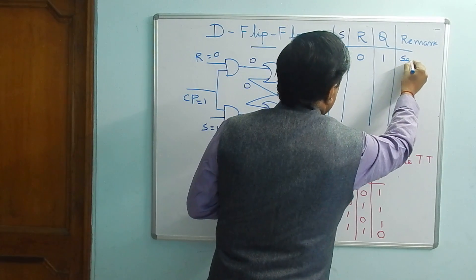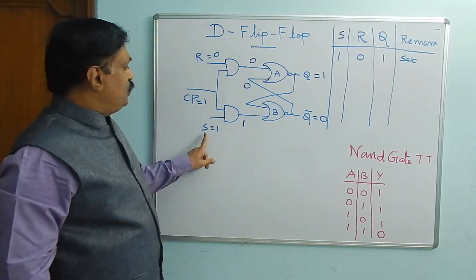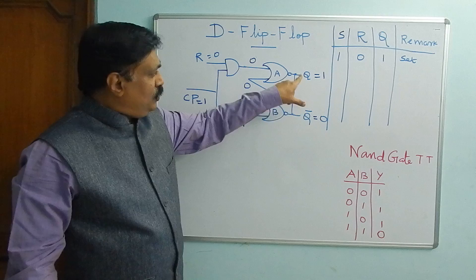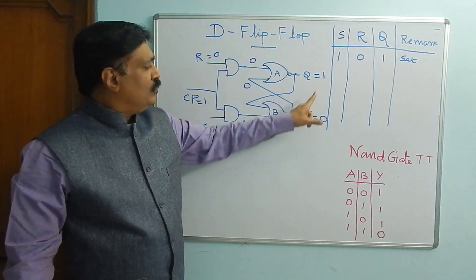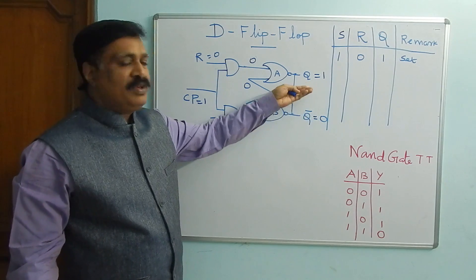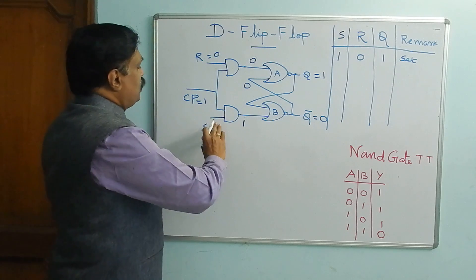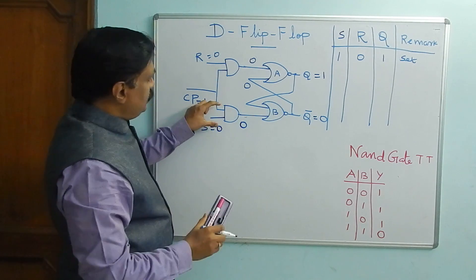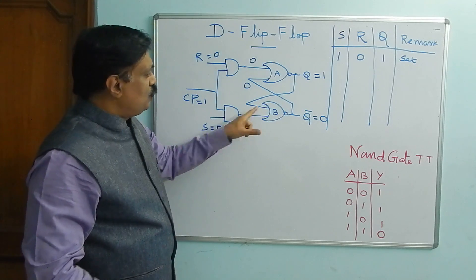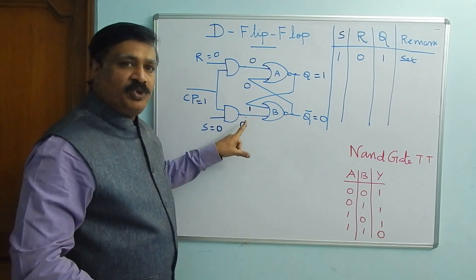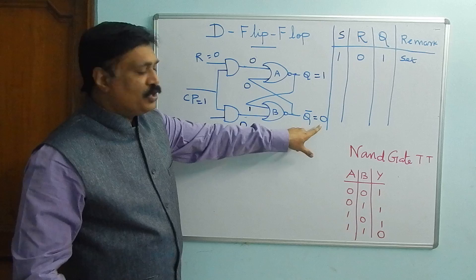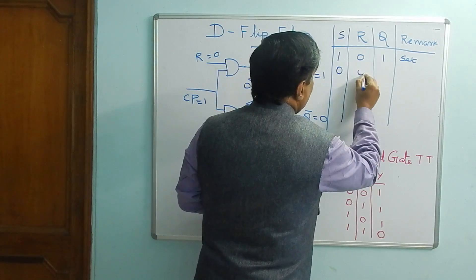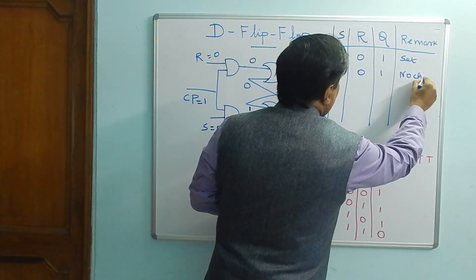When S equal to 1, R equal to 0, Q equal to 1 and Q-bar equal to 0. You only need to mention one output — no need to mention Q-bar separately since it is always the complement. Now if you change the inputs: if any one of the inputs is 1, the corresponding output is 0. Therefore again both inputs are 0, output is 1. So for the no-change condition there is no change.